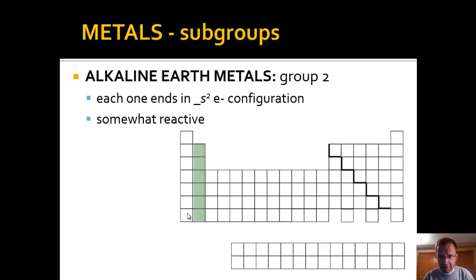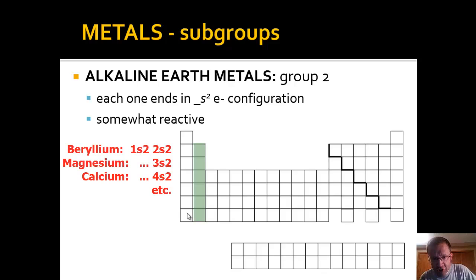The alkaline earth metals, a very similar name, are a part of group 2. And it's all of group 2. You see I've got it here shaded in blue. Each of these ends in an S2 electron configuration. For example, the very first one at the top is beryllium. Beryllium is 1S2, 2S2, and so it ends in 2S2. Magnesium is below that, ends in 3S2. Calcium below that in 4S2, and so forth. These are all also somewhat reactive, nowhere near as reactive as the alkali metals, but quite reactive.